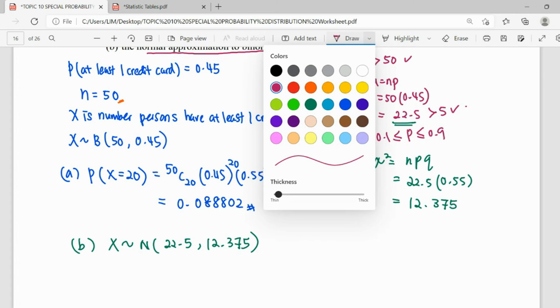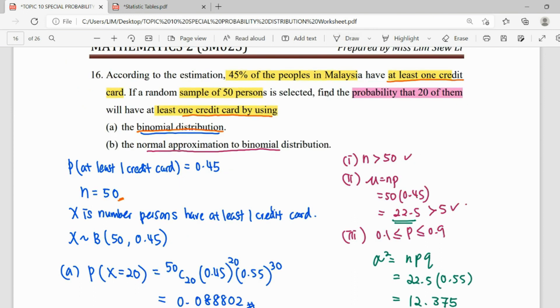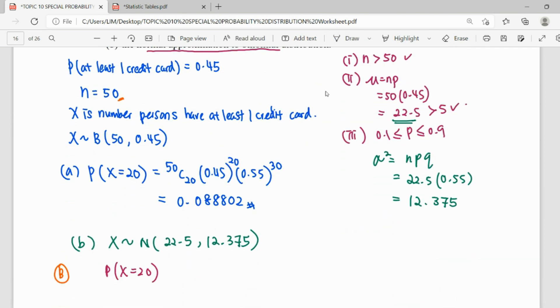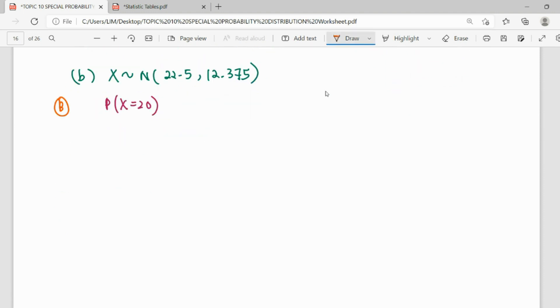So our question here is talking about probability X equals 20. As we know, this original question comes from binomial. To change it to normal distribution means that our question needs to do continuity correction. So for binomial, we need to change to normal with CC, then we change to standard, then we draw and we find from the table to get the answer. So this is our flow.